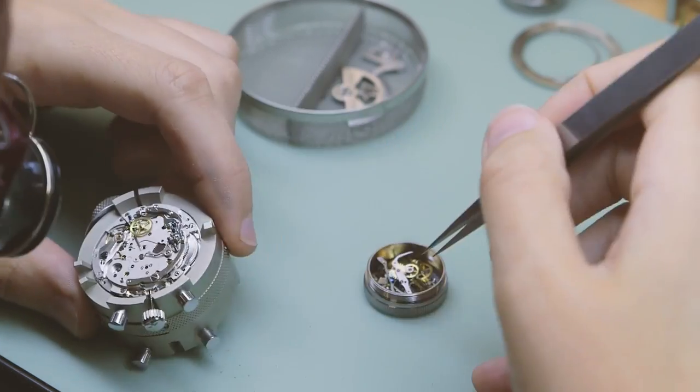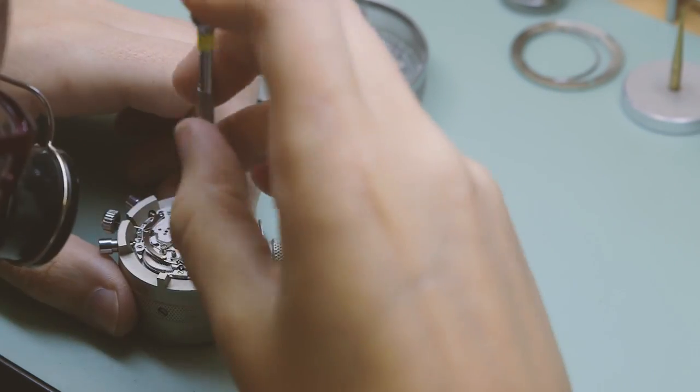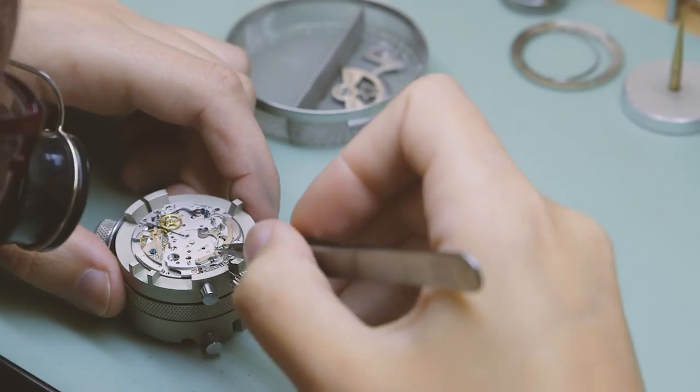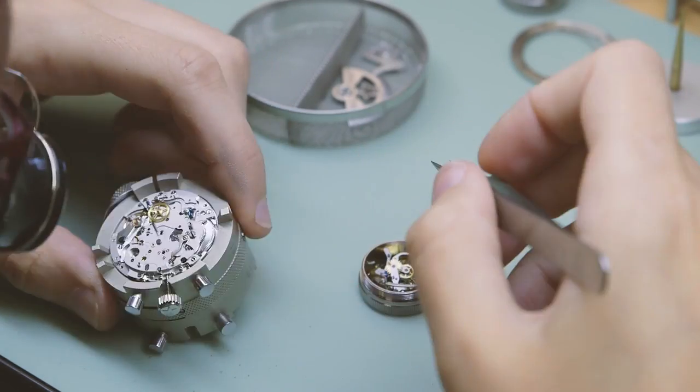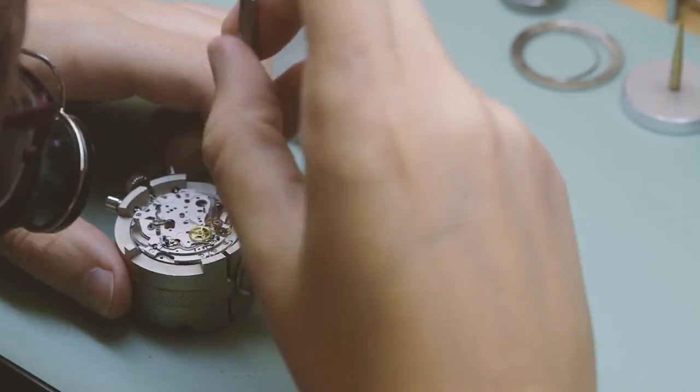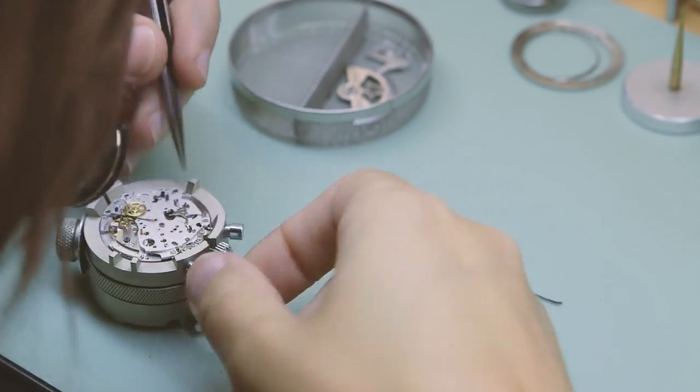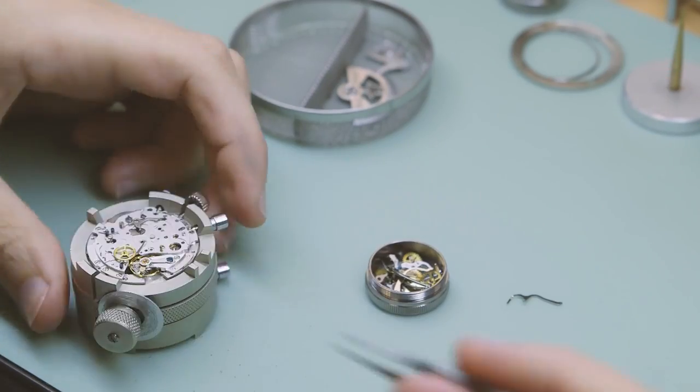If a shock is received then the balance staff will push its shoulder against the chaton and it will move both the chaton and cap jewel with the anti-shock spring flexing to allow this limited movement. This small movement absorbs the force of the impact in a safe way thereby protecting the vulnerable balance spring pivot.